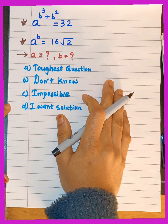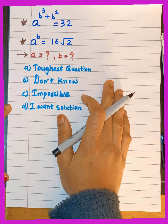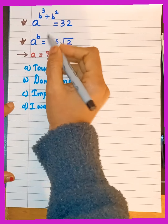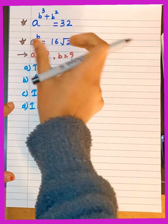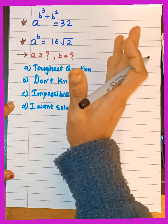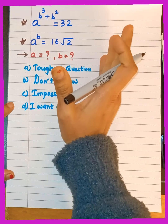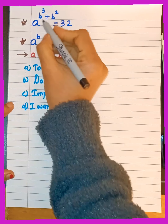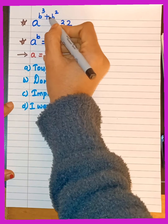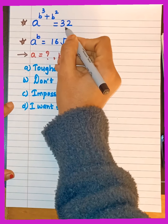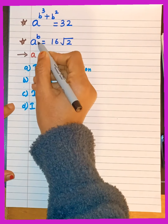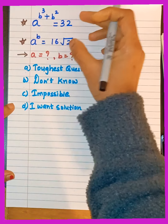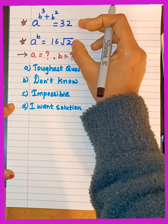Hello everyone, I am back with one more unique question. This question you will rarely find in any book. The question is: a raised to (b cubed + b squared) equals 32, and a raised to b equals 16 times the square root of 2. These two equations are given to us.